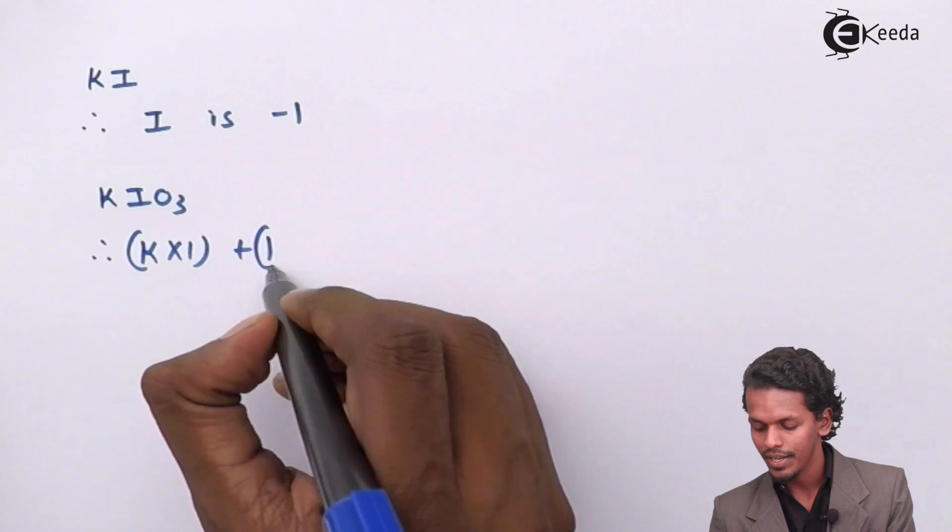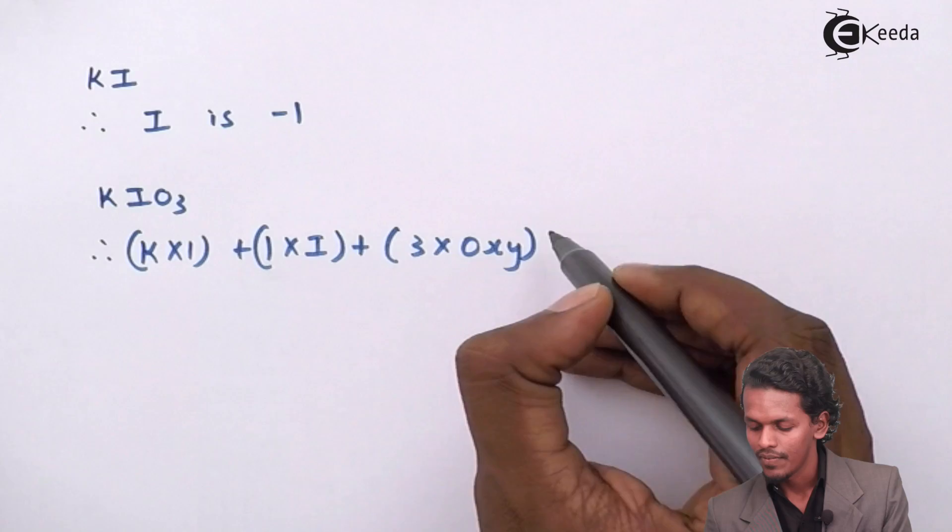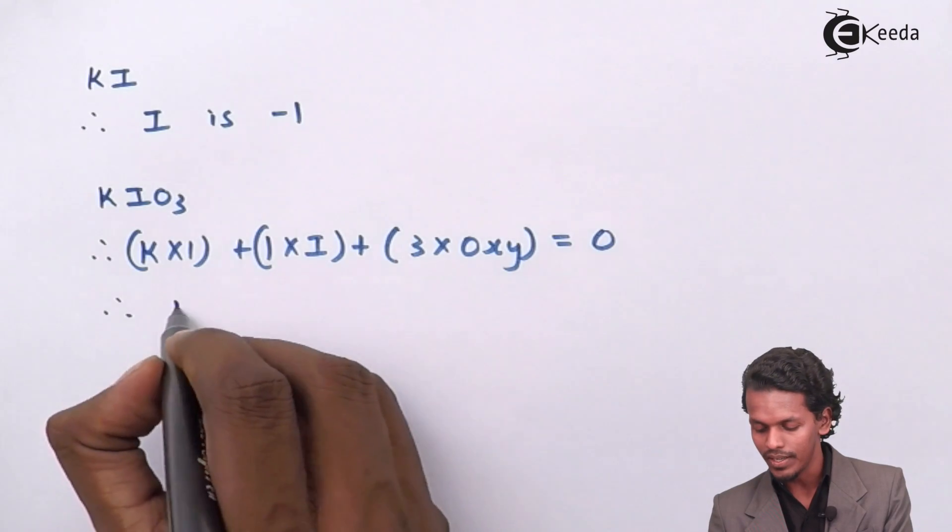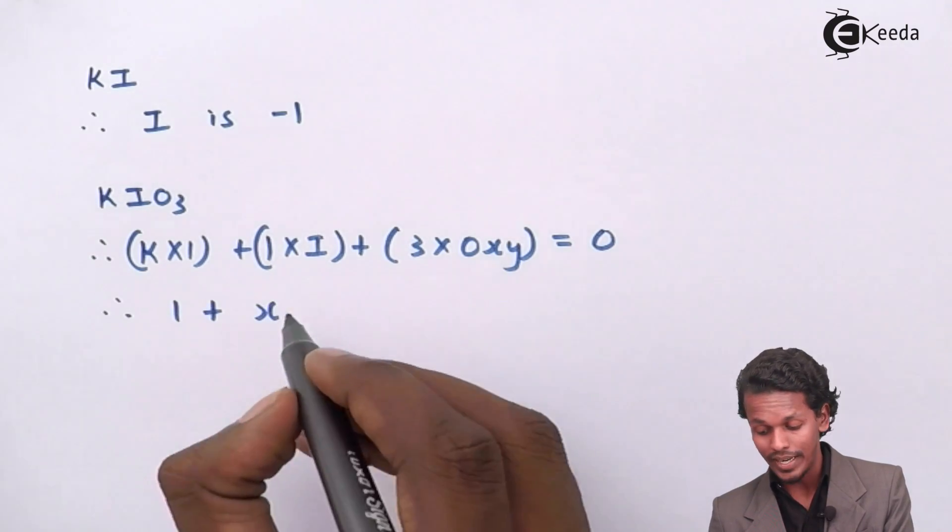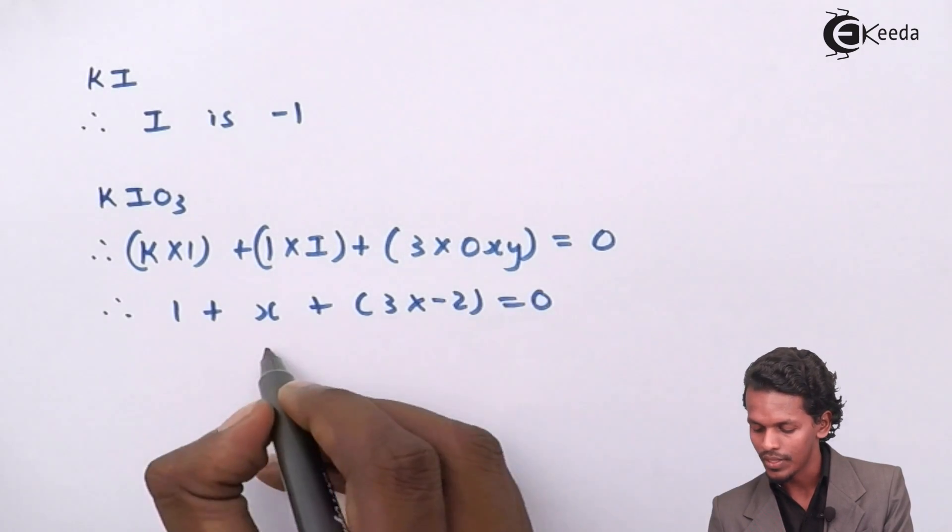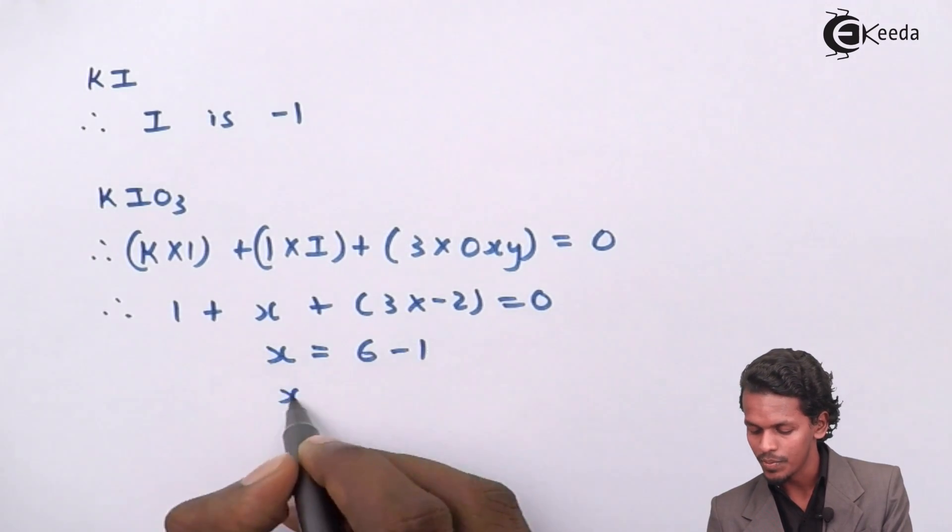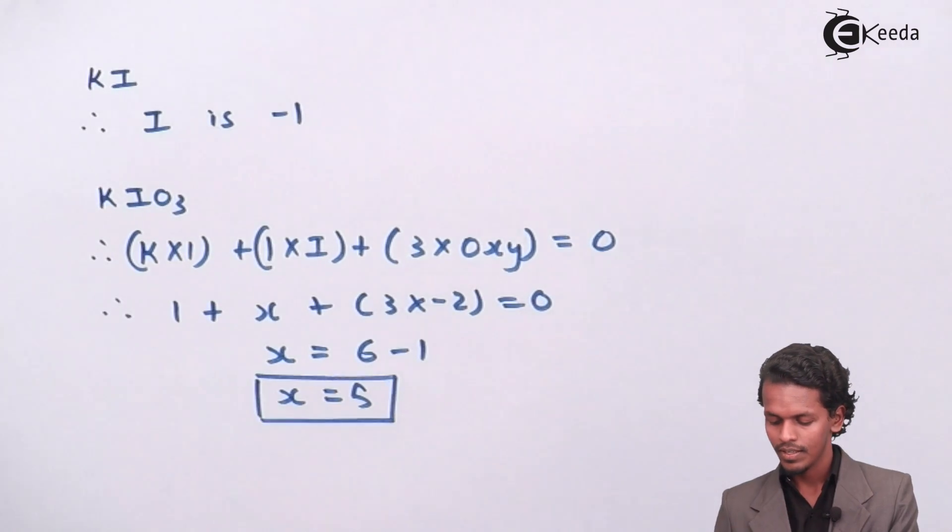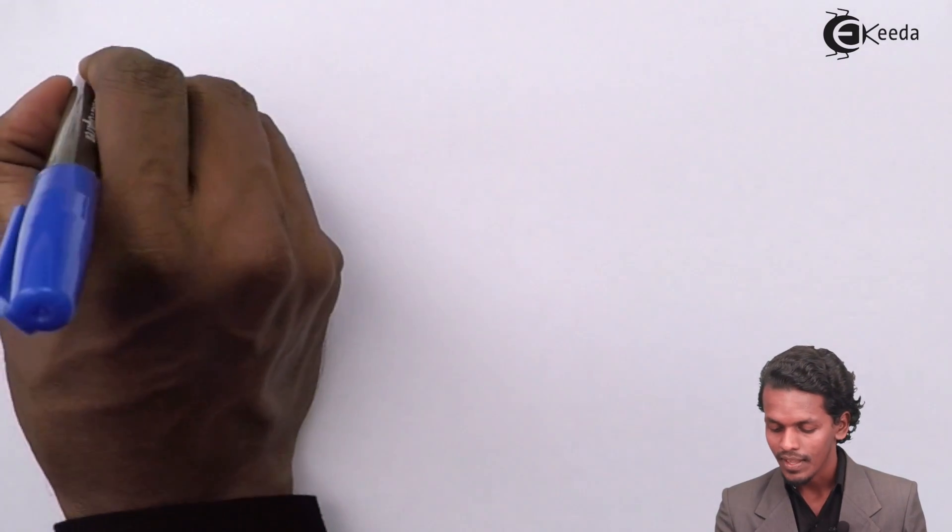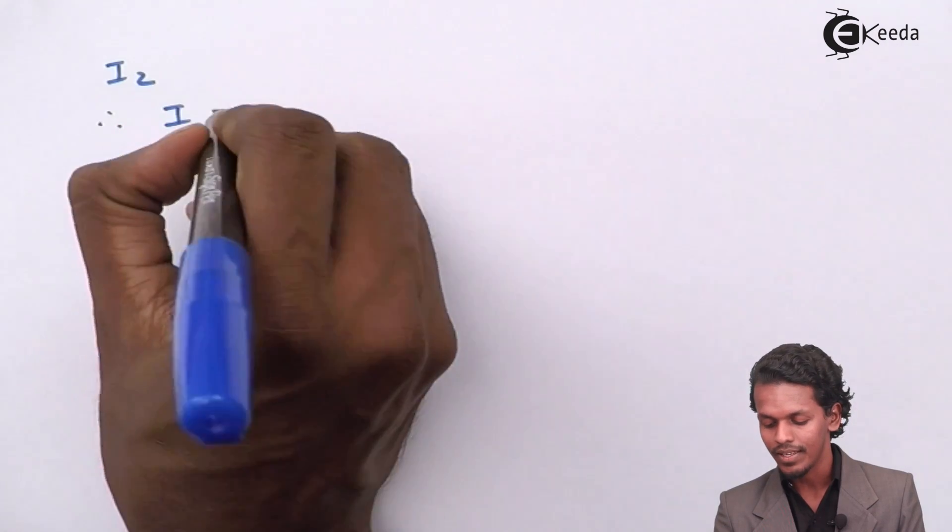Therefore, x is equal to six minus one which means five. So in case of the product I have got I2, so for I2 the oxidation number of iodine will be zero.